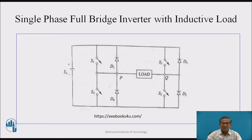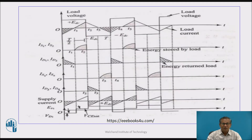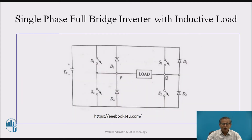Now, the load is inductive. This circuit consists of four switches S1 to S4, and D1 to D4 act as feedback diodes. These are the waveforms. At t = T1, gate pulses are applied for S1 and S2. The direction of load current is: source EDC → S1 → P → load → Q → S2. The direction of load voltage is positive and the load current is positive. The voltage across the load is same as the supply voltage EDC.